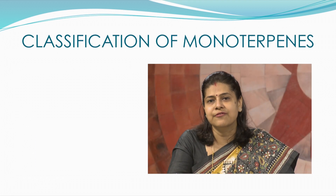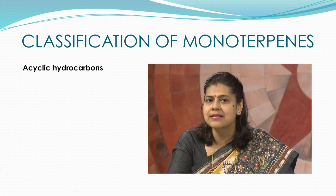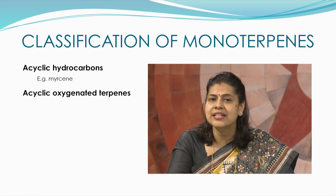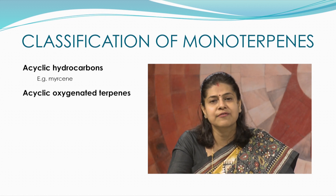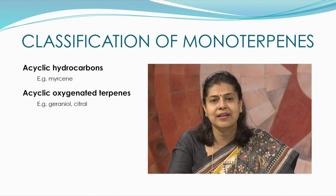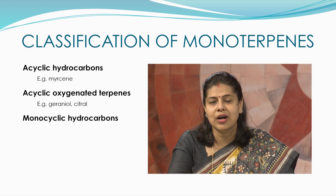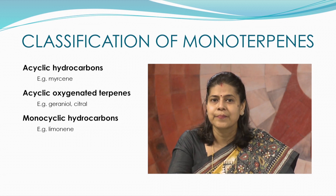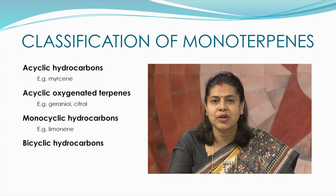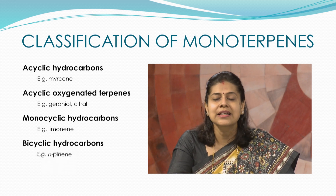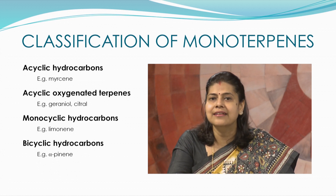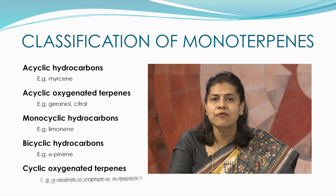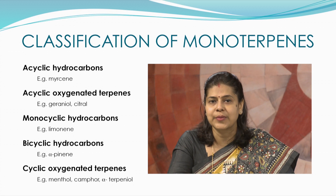Monoterpenes can be further classified as acyclic hydrocarbons — myrcene is an example. Acyclic oxygenated terpenes include citronellal and citronellol. Then we have monocyclic hydrocarbons — limonene is an example of this class. This is followed by bicyclic hydrocarbons, to which alpha-pinene belongs. And finally, we have cyclic oxygenated terpenes with examples of menthol, camphor, and alpha-terpineol.